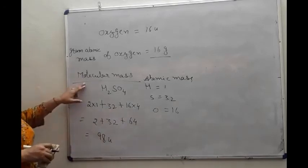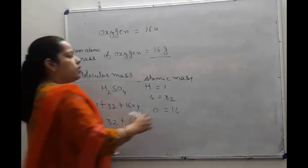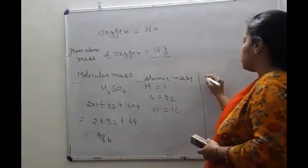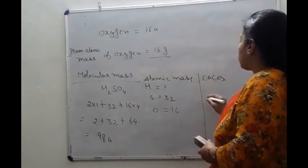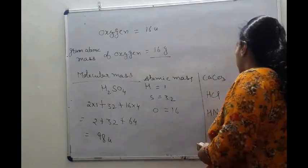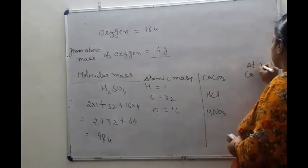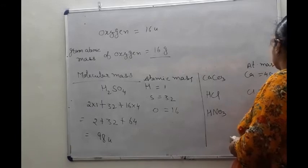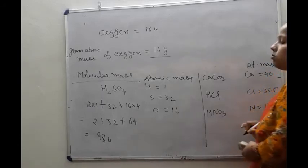If molecular mass is measured in grams, it is called gram molecular mass. Now, some problems for calculating molecular mass: calculate the molecular mass of calcium carbonate, hydrogen chloride, and nitric acid. The atomic mass of calcium is 40, chlorine is 35.5, and nitrogen is 14.